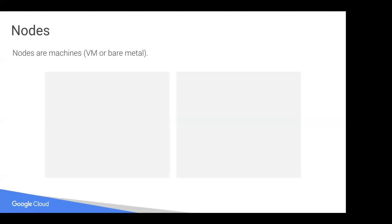Then we have a concept called nodes. Nodes are really just machines — whether they're VMs like on Google Cloud, or bare metal like in your own data center. It's just worth calling out that you'll see the word node everywhere, and when we say node, we just mean machine.